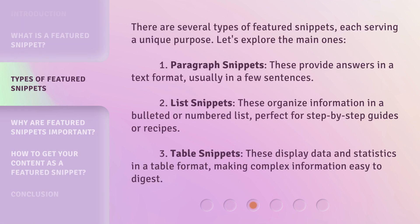There are several types of featured snippets, each serving a unique purpose. Let's explore the main ones. 1. Paragraph Snippets: These provide answers in a text format, usually in a few sentences. 2. List Snippets: These organize information in a bulleted or numbered list, perfect for step-by-step guides or recipes. 3. Table Snippets: These display data and statistics in a table format, making complex information easy to digest.